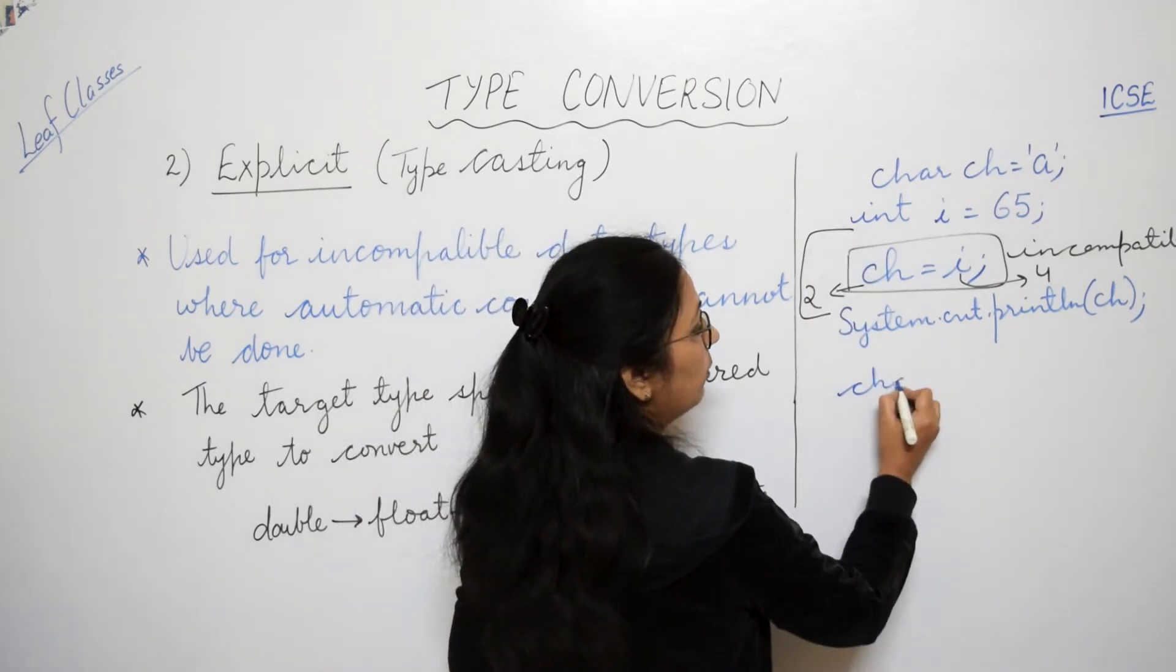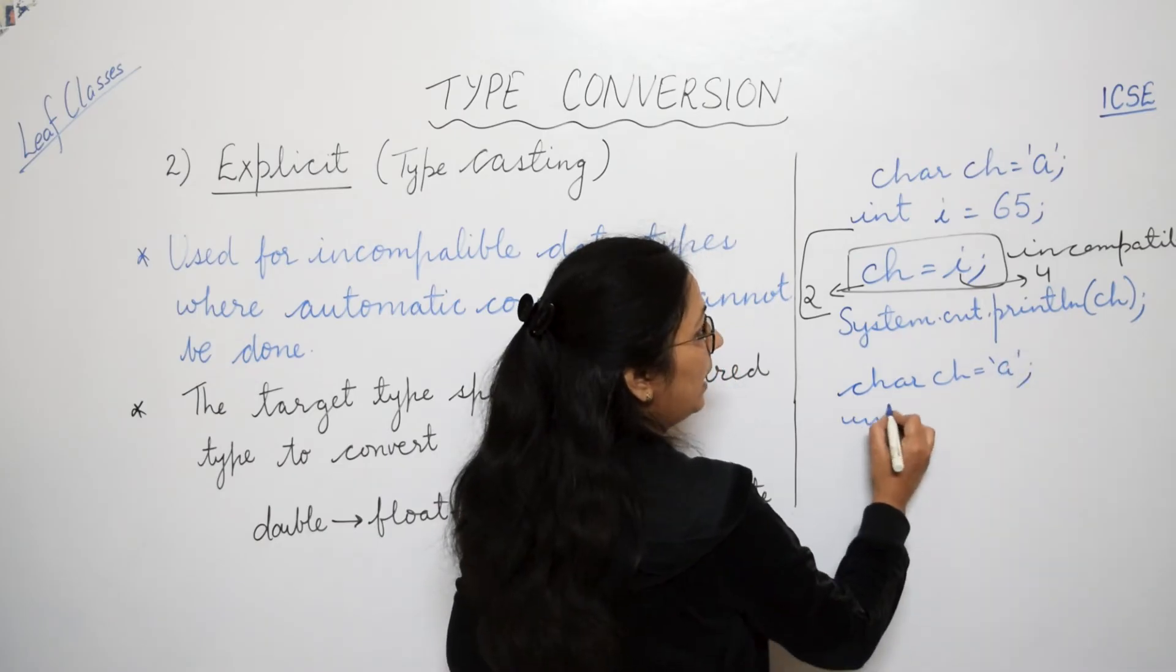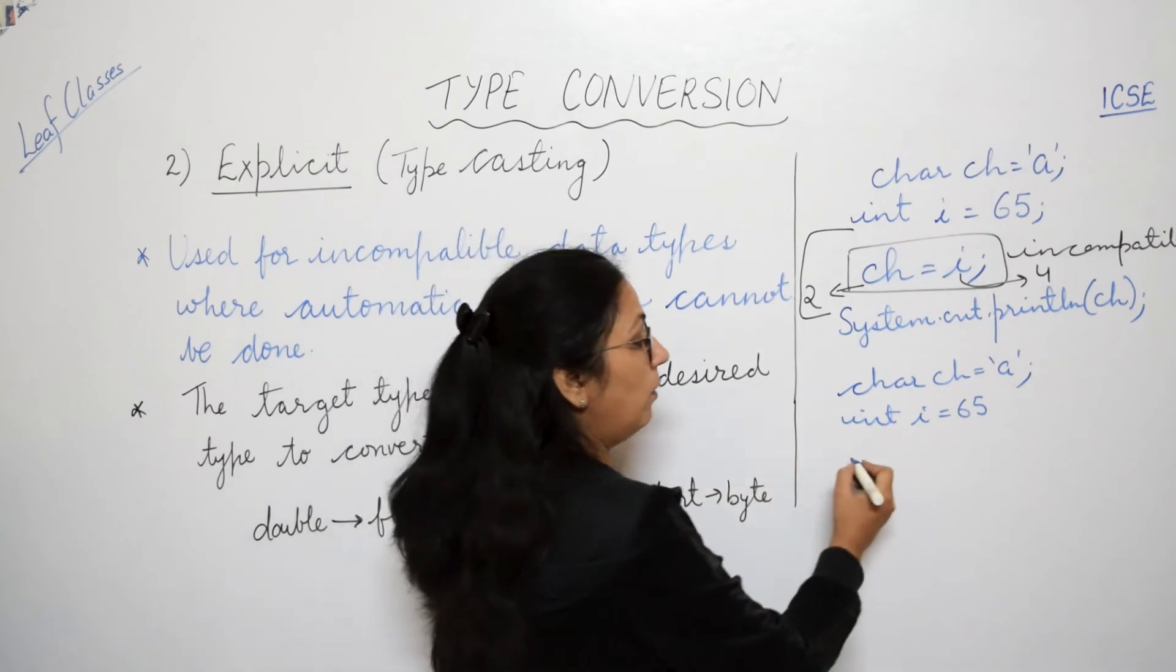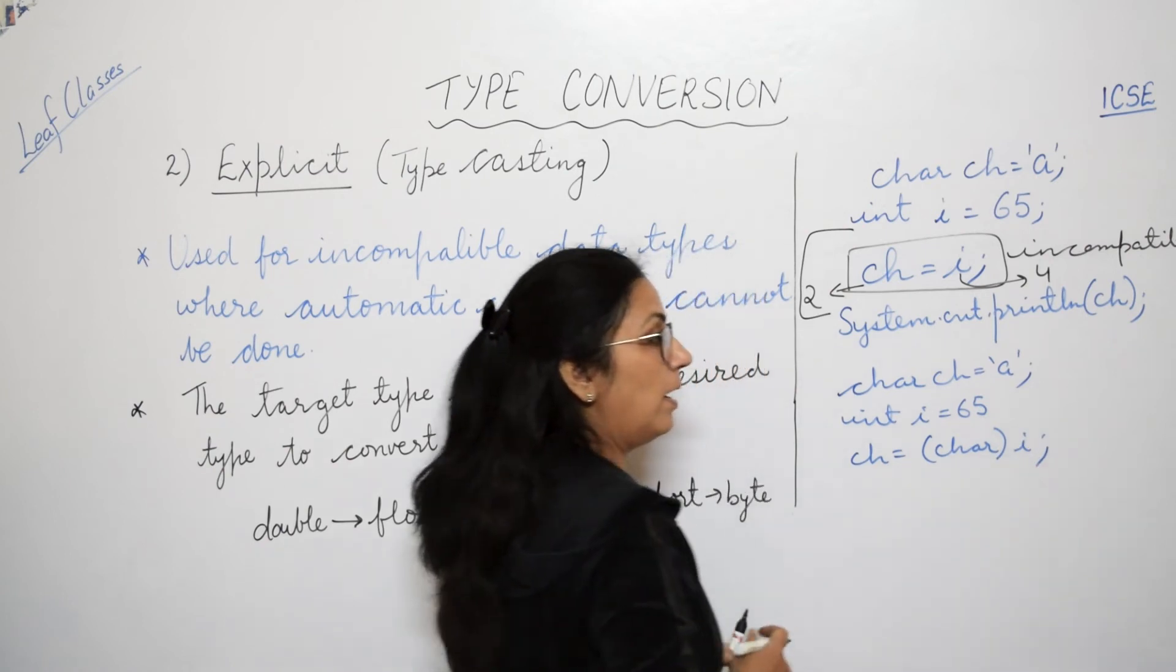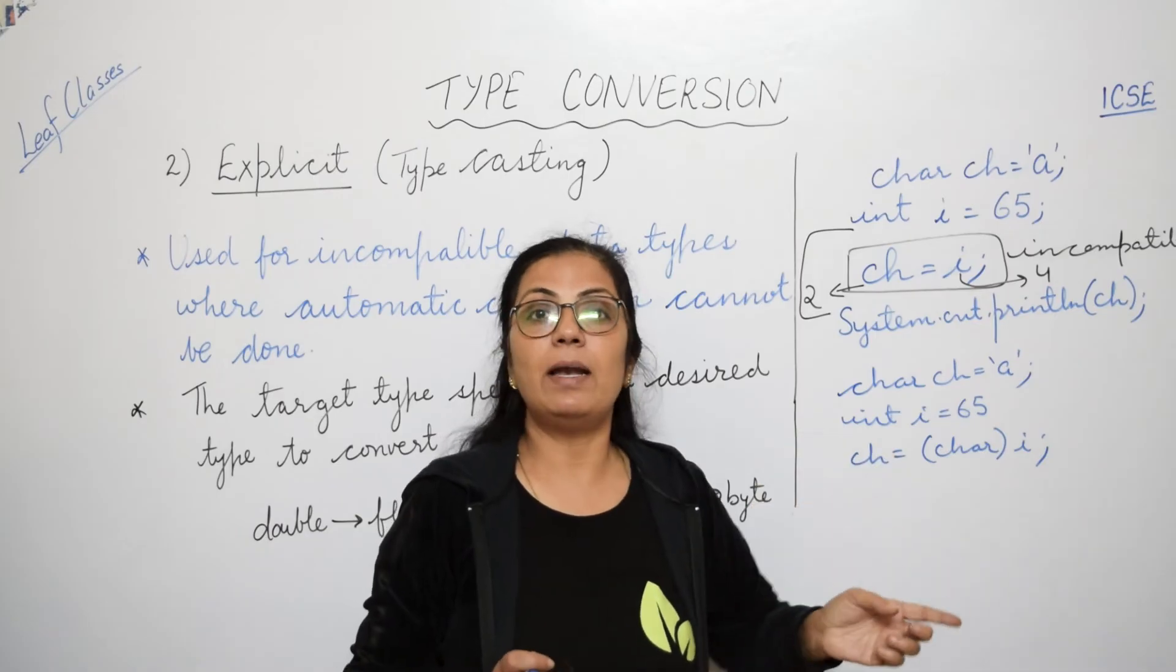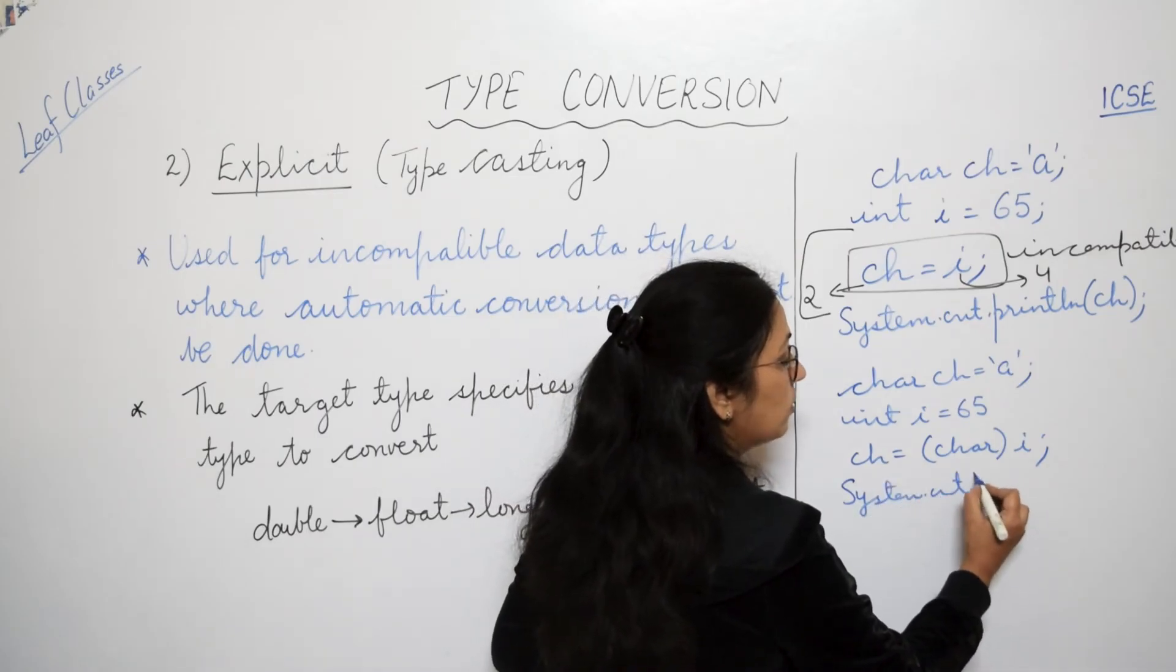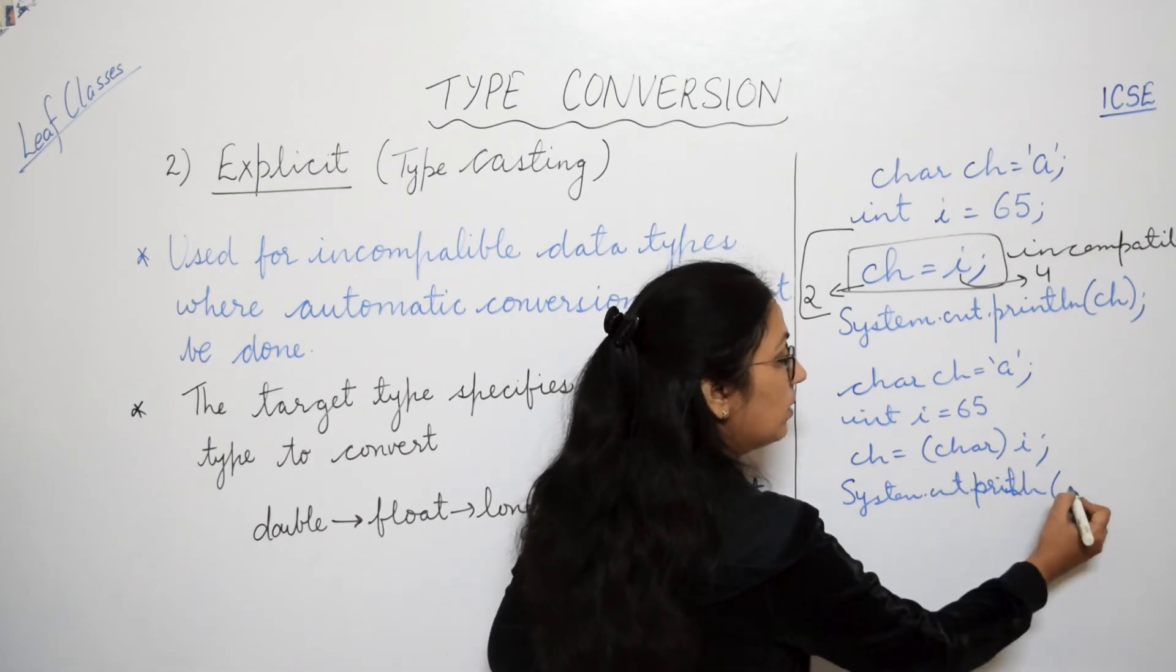So children, instead of this what we have to write? Char ch equals to a. This will remain same. Int i equals to 65. This will remain same. But here we will write ch equals to char of i. Now always keep in mind ki character value ko numeric value mein store bina conversion ke nahi kiya ja sakta hai.